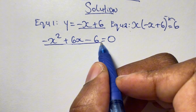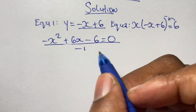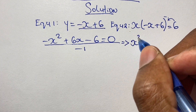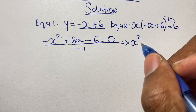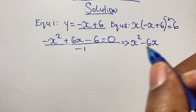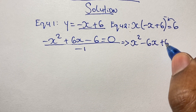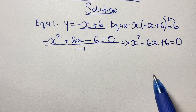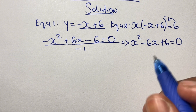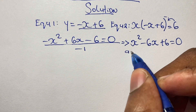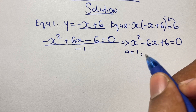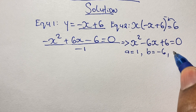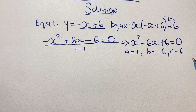We now have what we call a quadratic equation, and our value for a must be positive. So we divide the entire equation by negative 1, which gives us x squared minus 6x plus 6 is equal to 0. Looking at this quadratic expression, our value of a is positive 1, our value of b is negative 6, and our constant term c is positive 6.